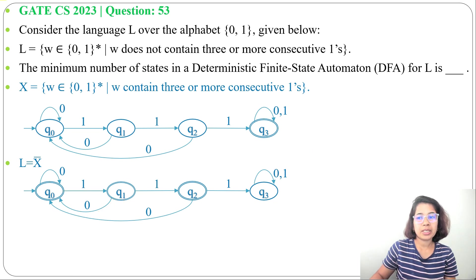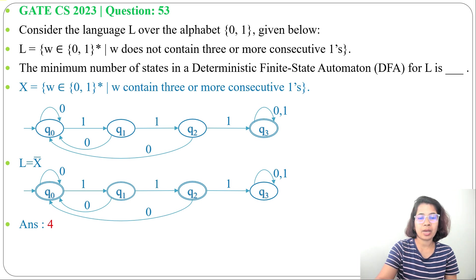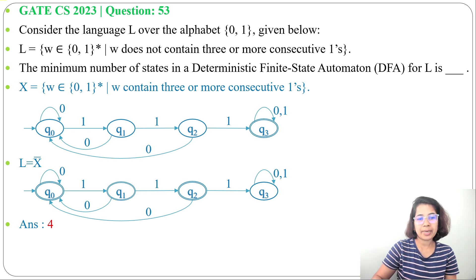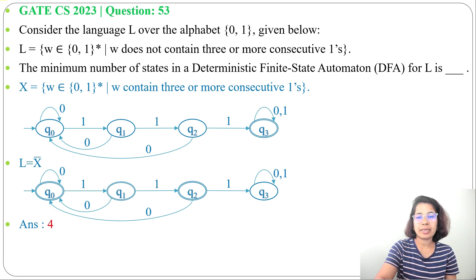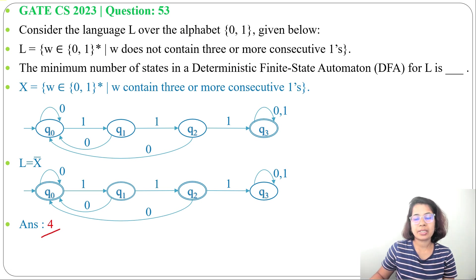Our question asks for the minimum number of states required in the DFA. We require a minimum of 4 states, so the answer is 4. Note that complementing a DFA only changes final states to non-final and vice versa — all transitions stay the same. So if the DFA for X requires 4 states, its complement also requires 4 states. Answer: 4. If this lecture was helpful, please like, share, and subscribe. Thank you.